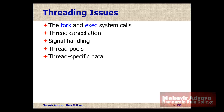Hi, welcome back. In the last video we talked about various multi-threading models like one-to-many, one-to-one, and many-to-many. In this lecture we'll discuss threading issues that are faced in multi-threading processes, including the fork and execute system calls, which are made when a process creates a new process.